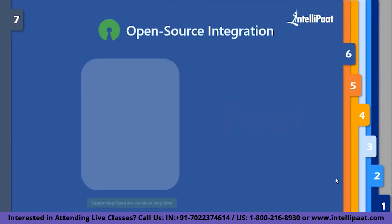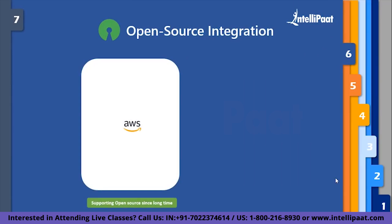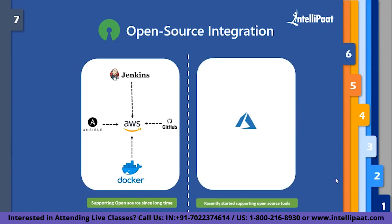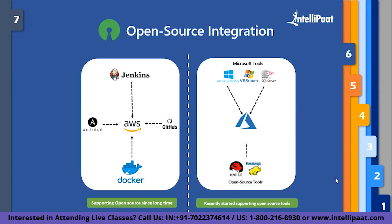Amazon has had quite better relations with the open source communities, leading to more open source integrations with AWS, which includes open source tools like Jenkins, Docker, Ansible, GitHub, and it is also very friendly when it comes to Linux servers. In the case of Azure, it offers native integrations for Windows development tools such as Visual Studio, SQL Database, and Active Directory. And though Microsoft hasn't always embraced open source, recently they have been catching up, and now organizations can run Red Hat Enterprise Linux Edition and Hadoop clusters in Azure.